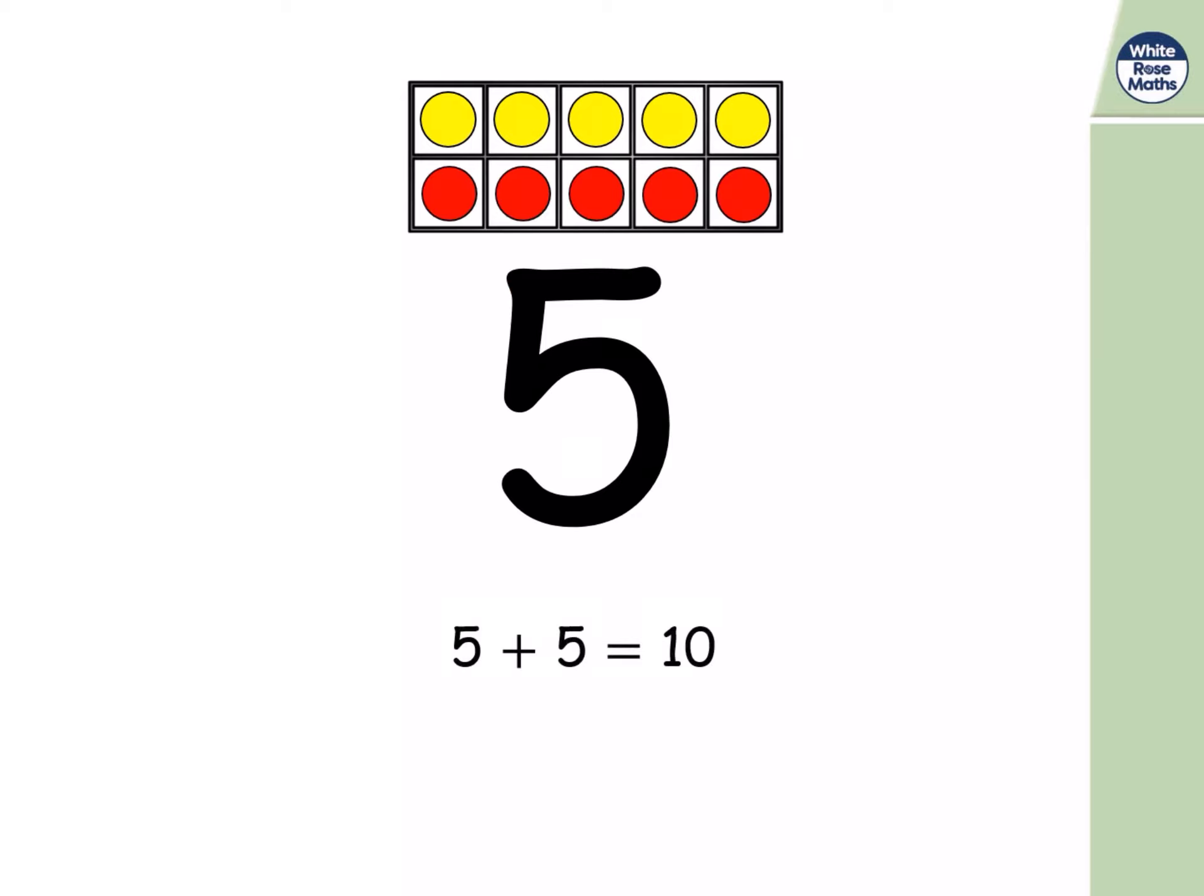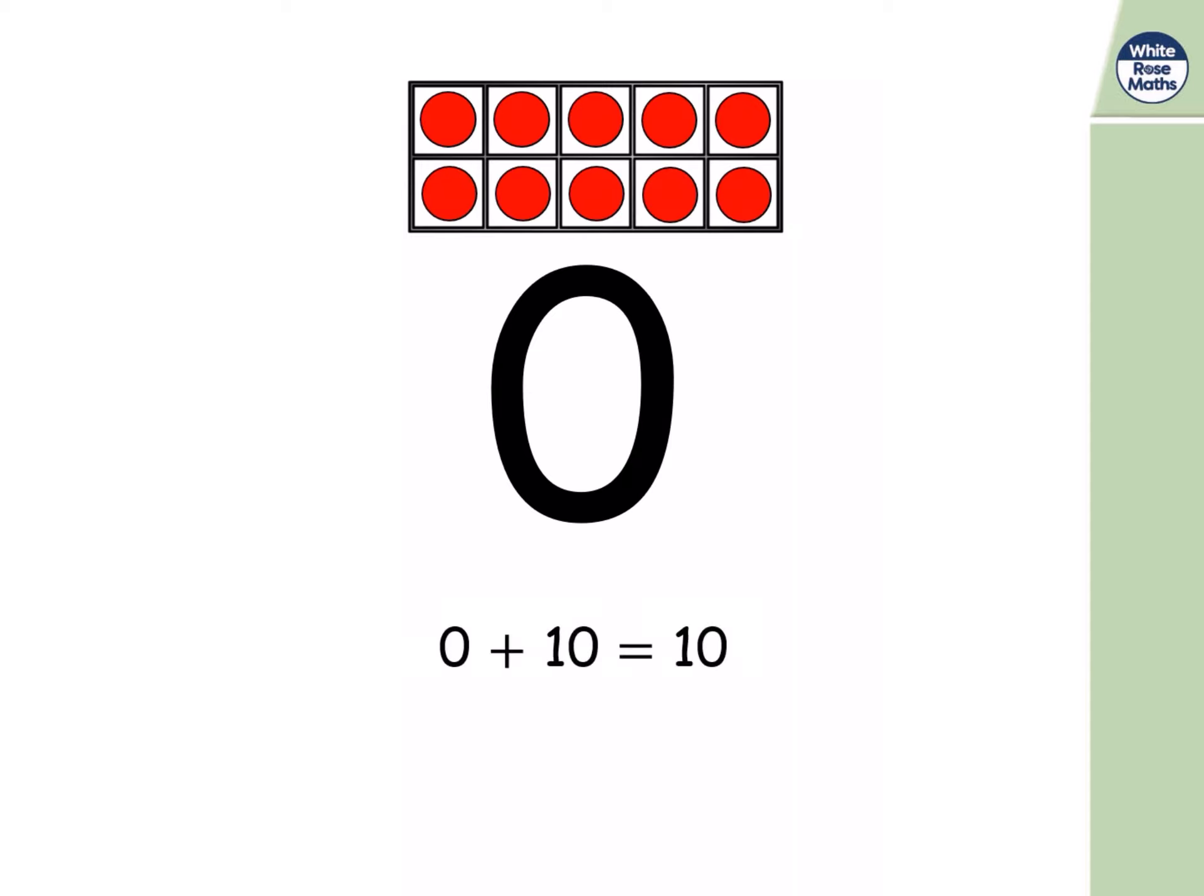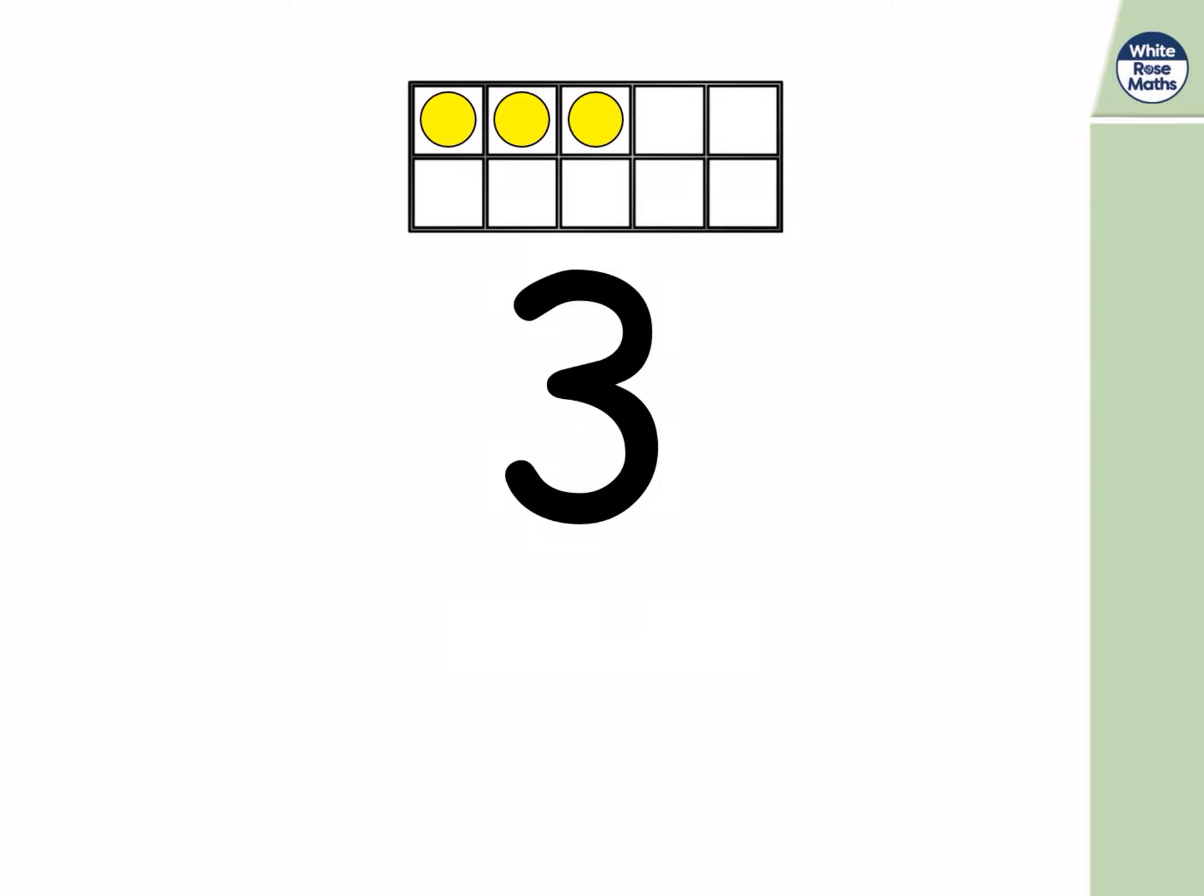Five and five. One and nine. Oh, zero. That's right, zero and ten. Three and seven. Seven and... That's right. Three.